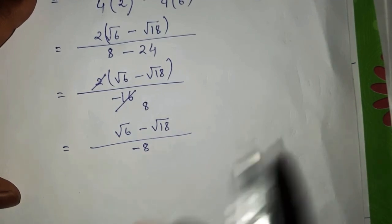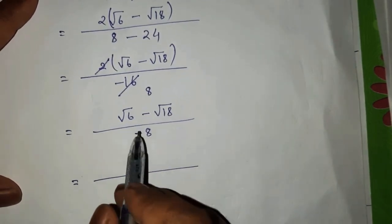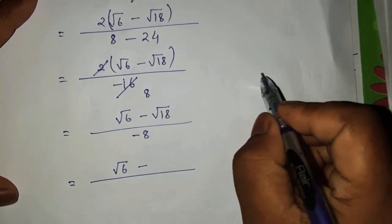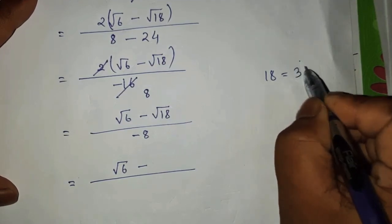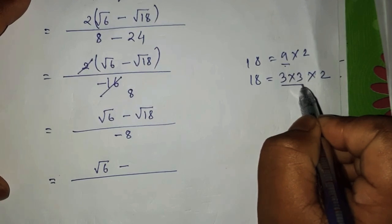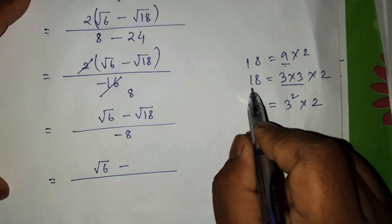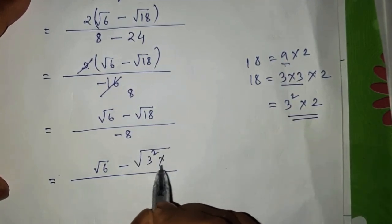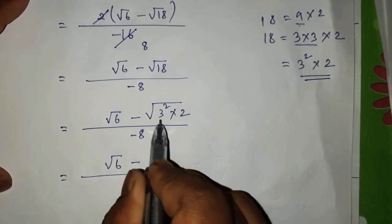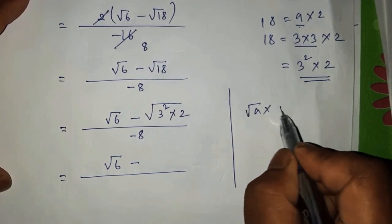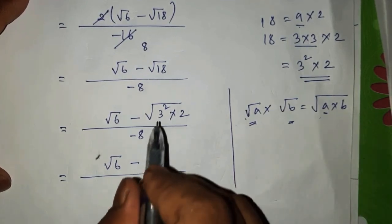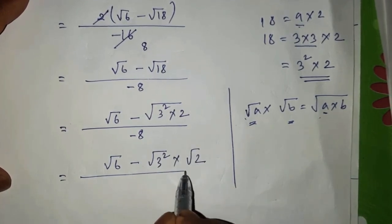This is the boundary of root 6 minus root 18 divided by minus 8. If we expand root 18, we can multiply root 3 into root 3 into 2. We call it 3 into 3 into 2. Now 3 into 3 is 3 square. This is the formula: root a into root b equals root ab. This is a root of 3 square and the square root of 2.